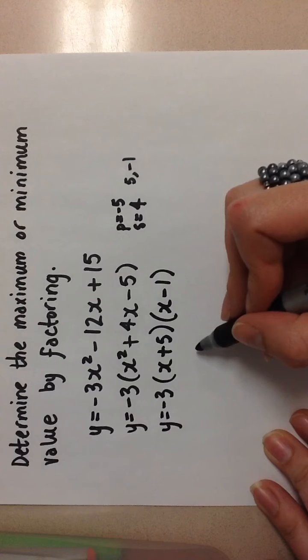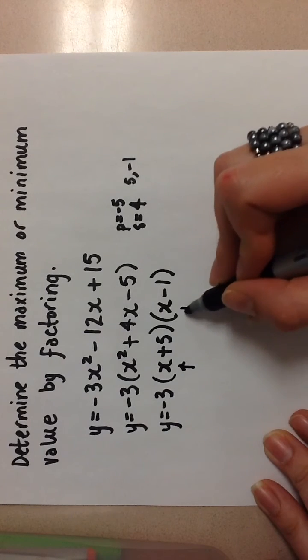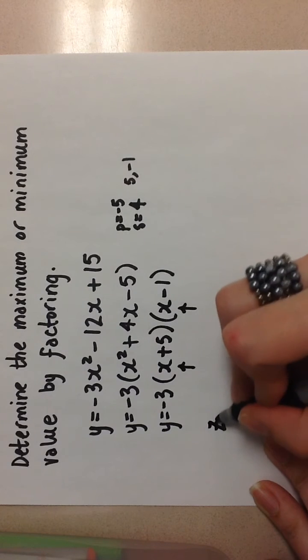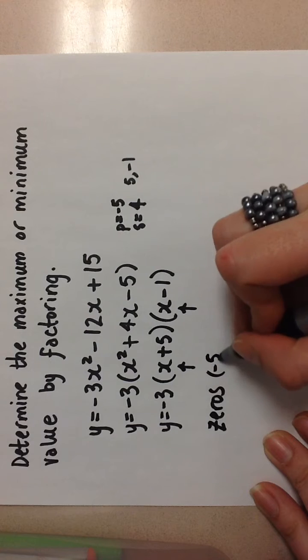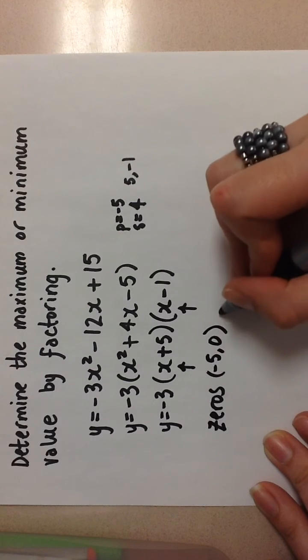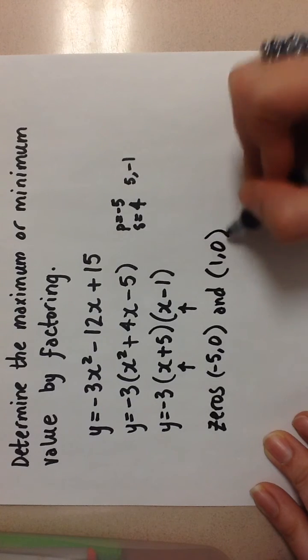So this gives me the two zeros, which are going to be at negative 5, 0 and 1, 0.